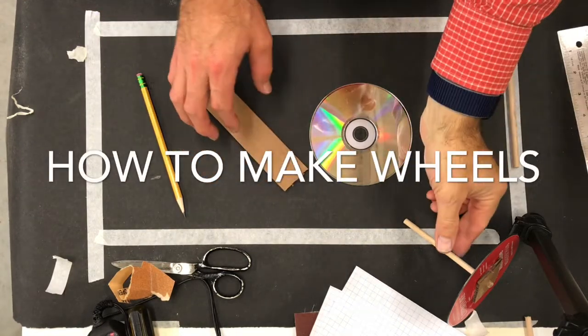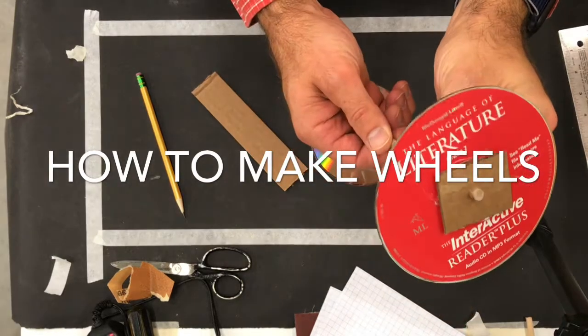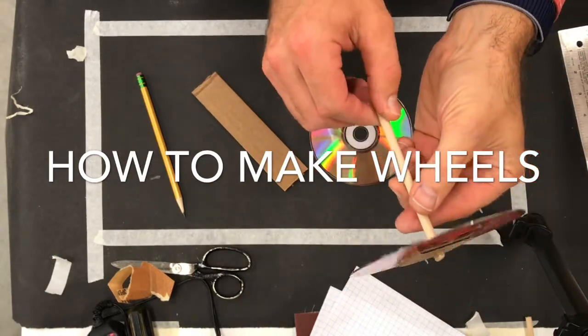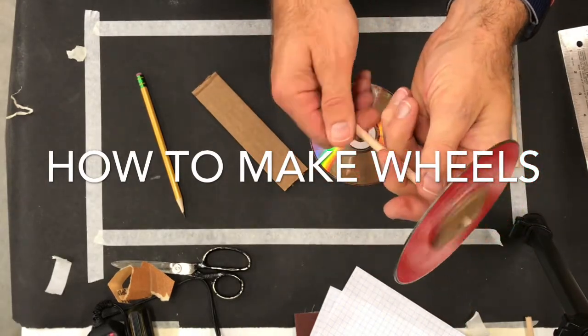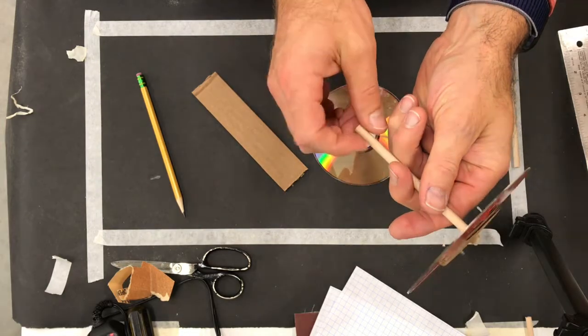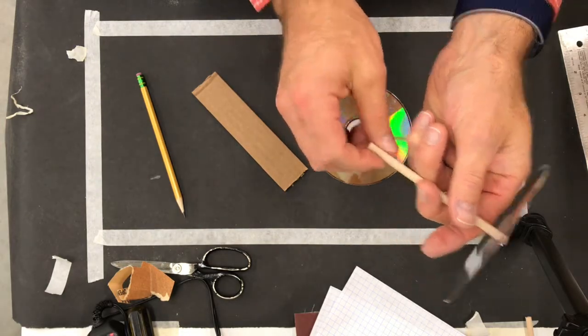All right, ladies and gentlemen, today we're going to talk about how to make your wheels. Ideally, you want the CD, which makes for a great wheel, to be on the dowel rod and not wobble at all, nice and straight.